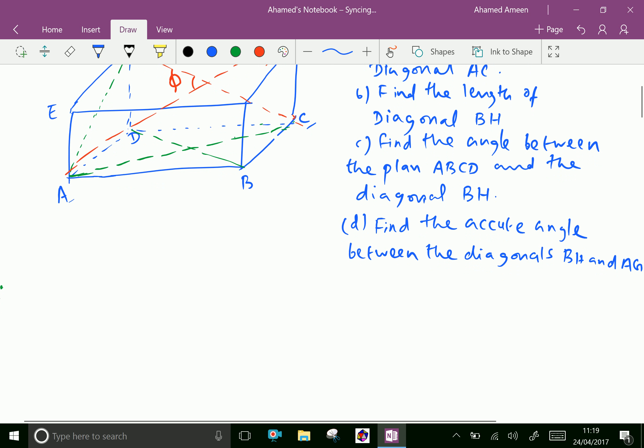Now let us calculate the diagonals. For AC, AC equals the square root of AB squared plus BC squared. Here the given values are AB is 8 centimeters, BC is 6 centimeters, and height CG is 7 centimeters.